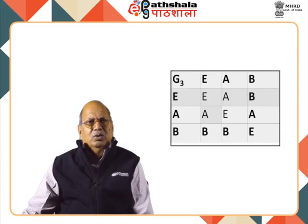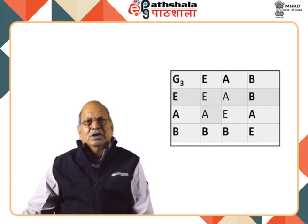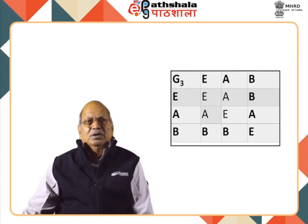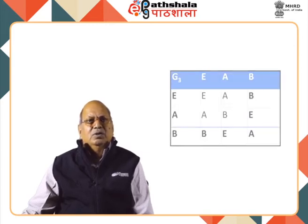However, with entries A·A = E and B·B = E, the table shows repetition of elements in two rows, so it is not a valid group multiplication table. Thus the assumption A·A = E is not correct. Therefore A·A = B, so entry in box 1 is B. Then B·B = A in box 4. For entries 2 and 3, the product elements B·A and A·B are equal to E. The complete G3 group multiplication table has no repetition in any row or column. The G3 group is an example of a cyclic group: A² = B and A³ = E.